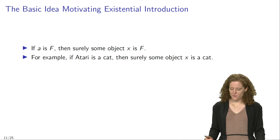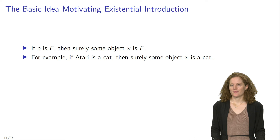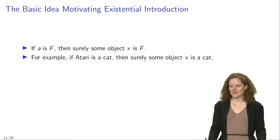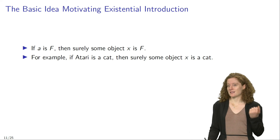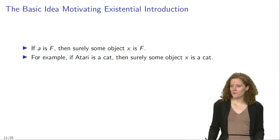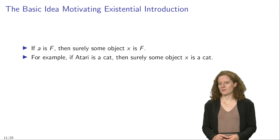So for example, if Atari is a cat, then surely some object X is a cat. From the claim that a specific object — in this case Atari — has a property — in this case the property of being a cat — you can infer that some object has this property.